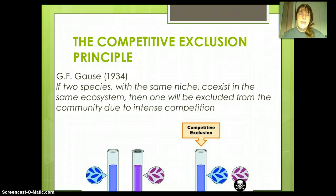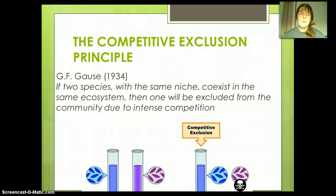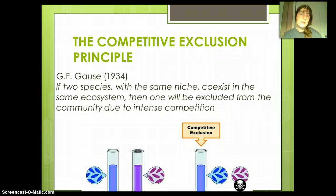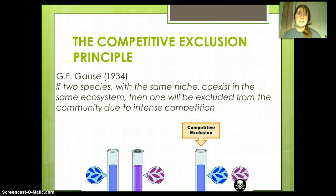This goes toward a principle that's fairly well established in ecology called the competitive exclusion principle. It was first named in 1934, and the idea is that if two species exist within the same niche — if they're in the same place at the same time — then one of them will cease to exist because of intense competition. The closer two niches are to each other, the more competition that will exist, and if there's too much overlap, one of those organisms will cease to exist.